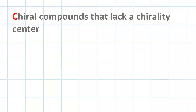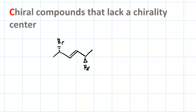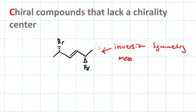We've seen that not all compounds that have a chirality center are chiral — think meso compounds. For instance, this compound here has inversion symmetry, and having inversion symmetry makes it meso. So it's not such a stretch of the imagination that a compound can have no chiral carbons and still be chiral.